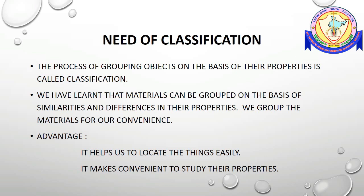What is the need for classification or grouping of substances? Every material has certain properties. The process of grouping objects on the basis of their properties is called classification. Materials can be grouped on the basis of similarities and differences in their properties. We group materials for our convenience — it helps us locate things easily and makes it convenient to study their properties.